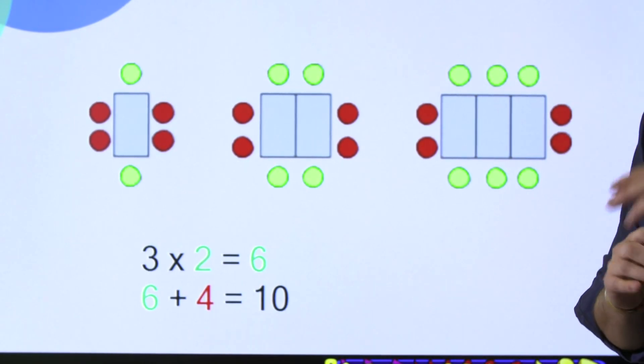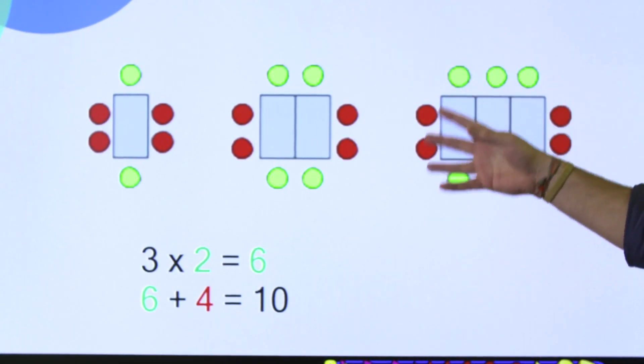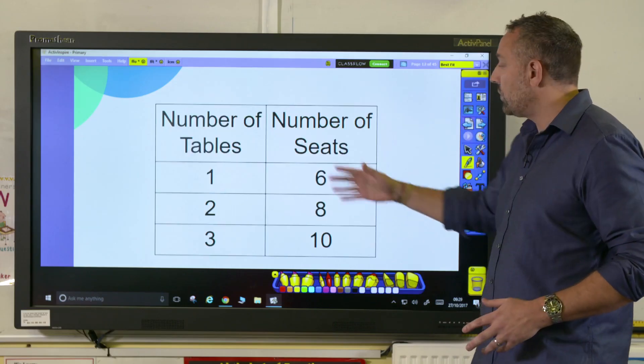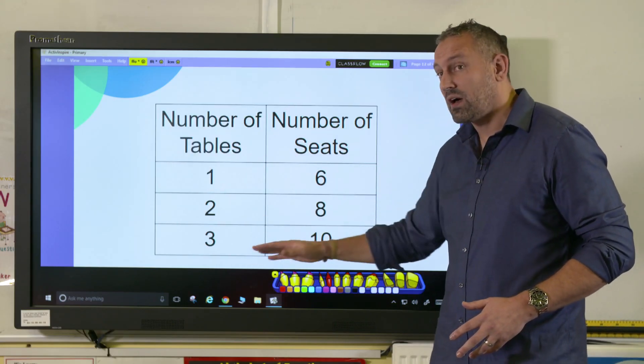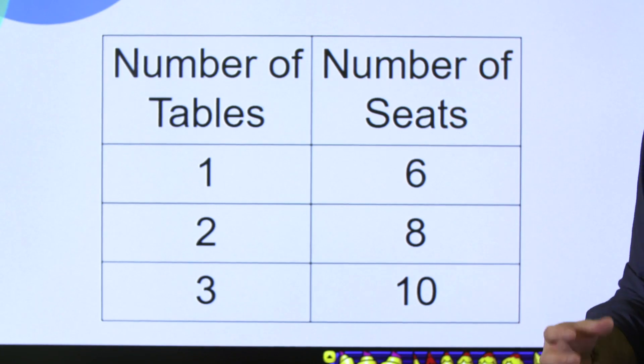If you've got that table going down to four, five, to ten, that will really make it clear for the children.